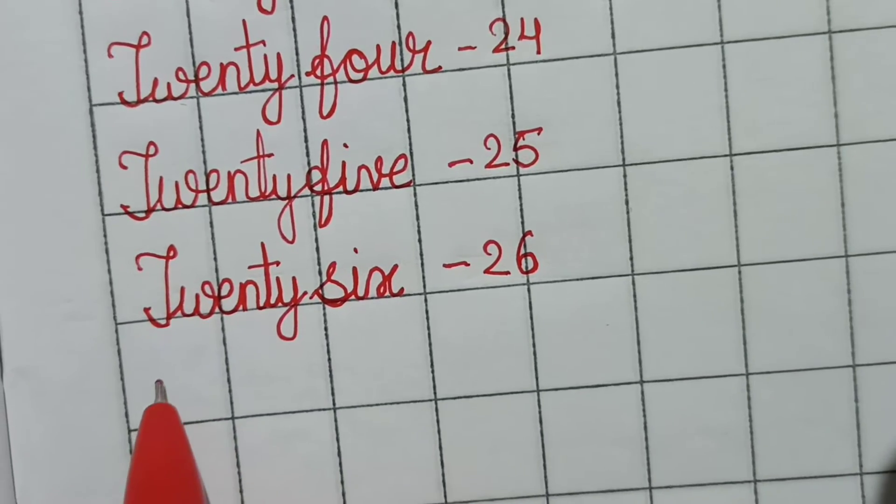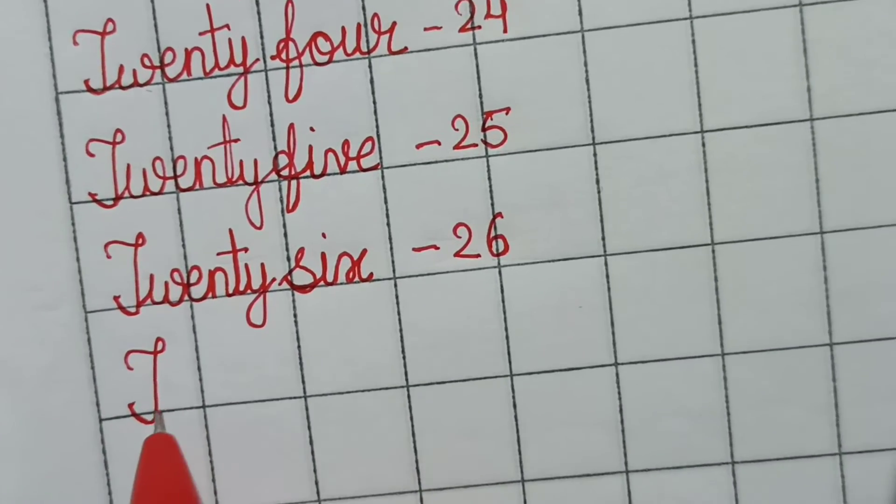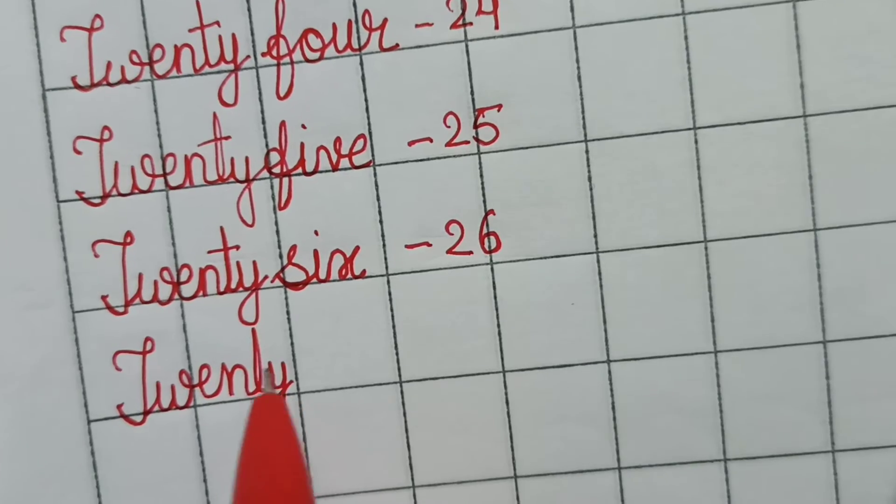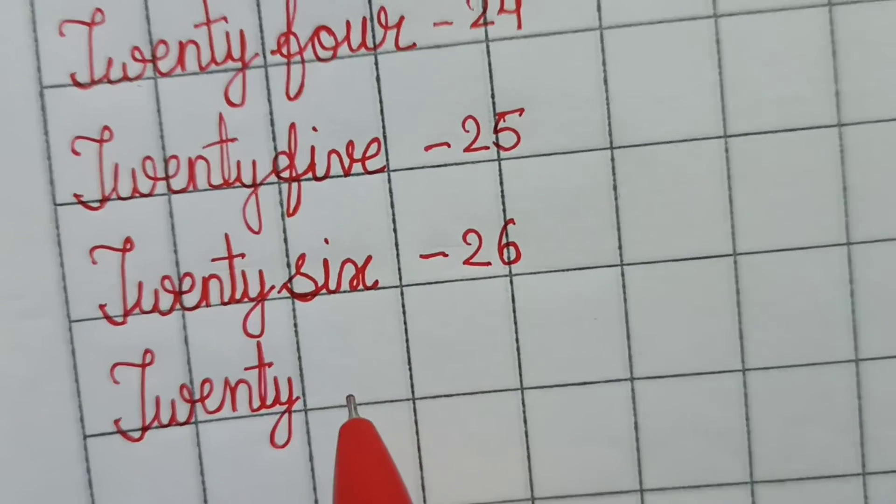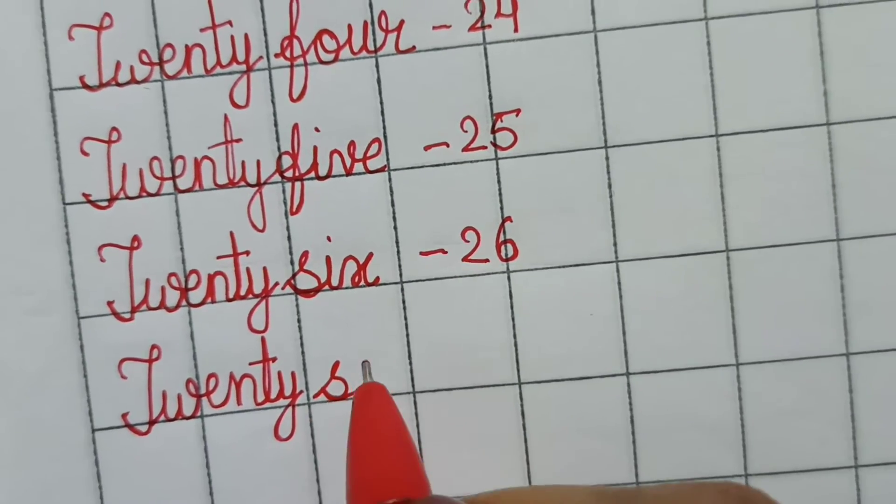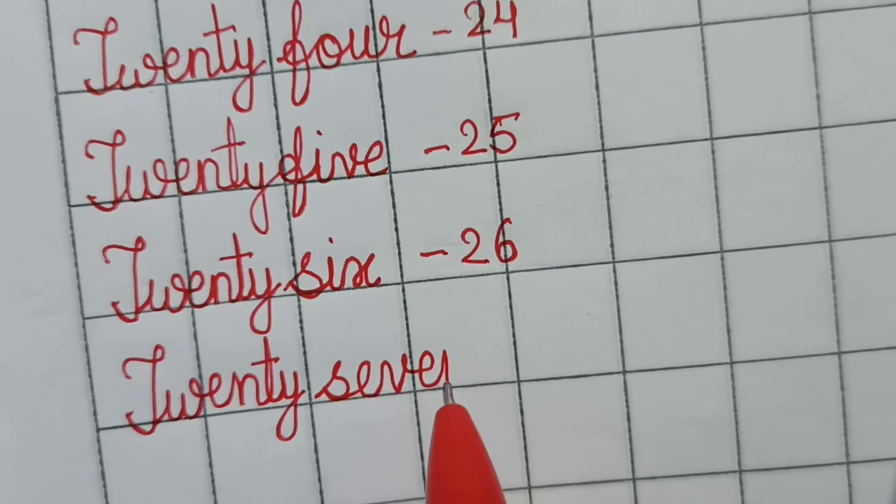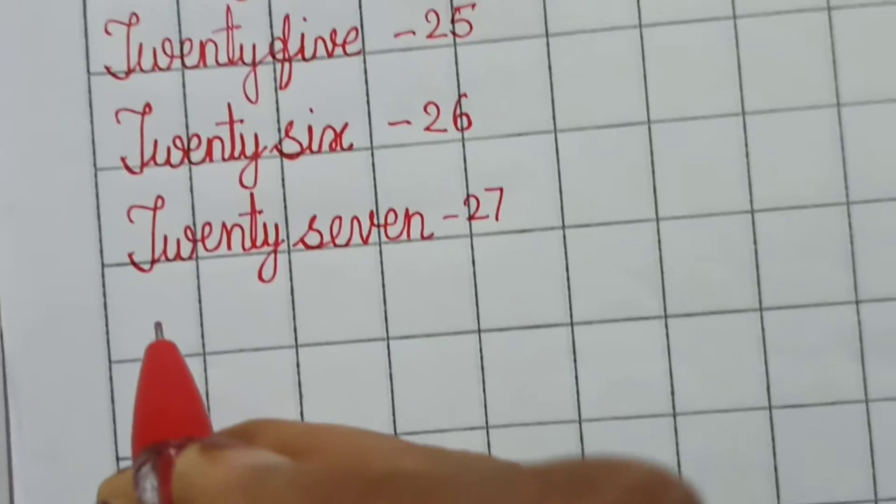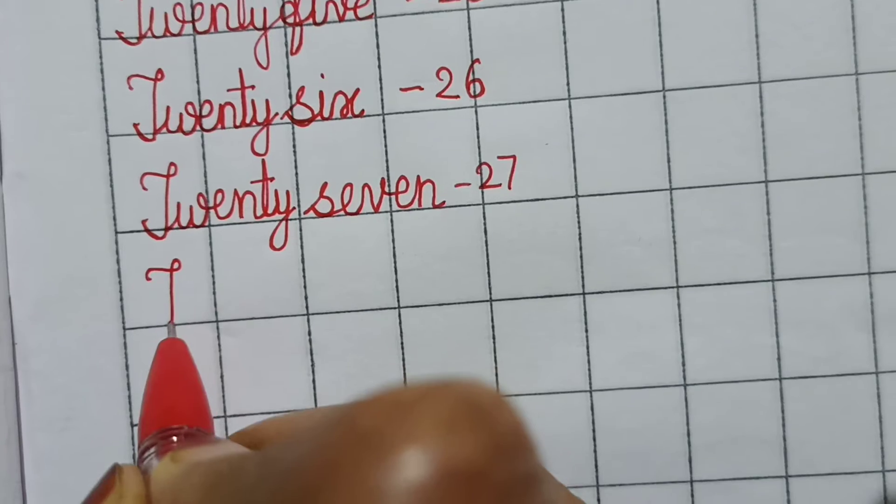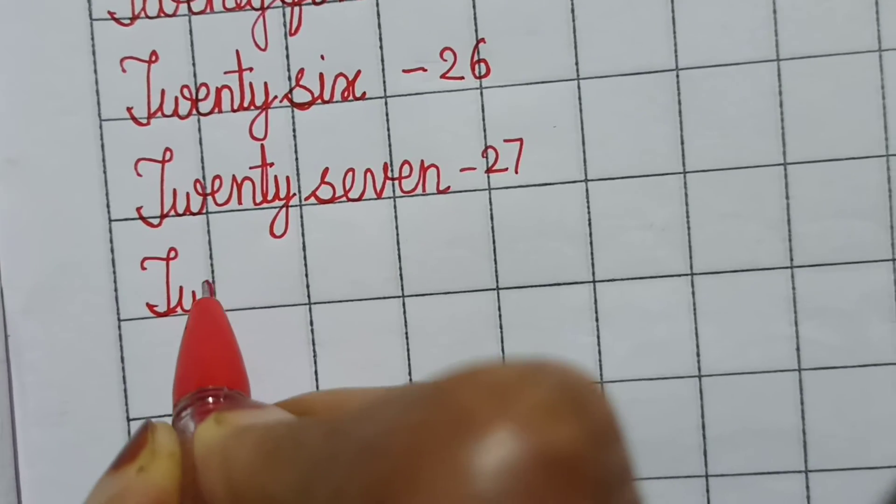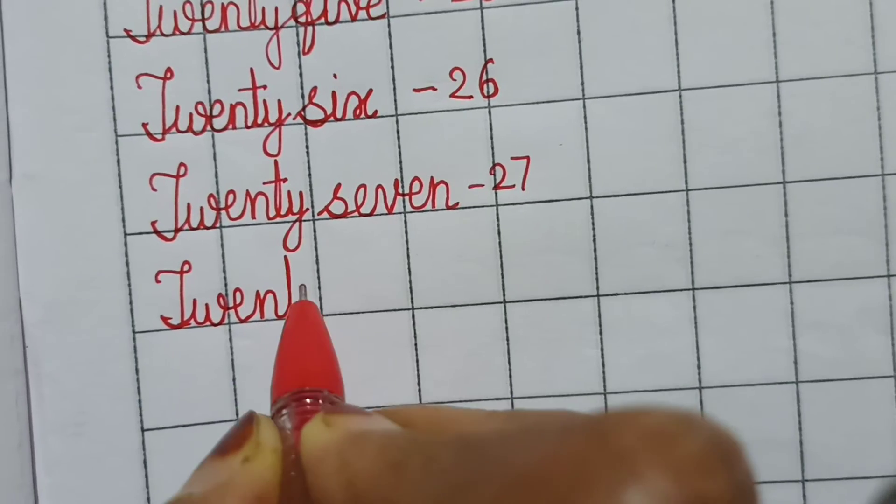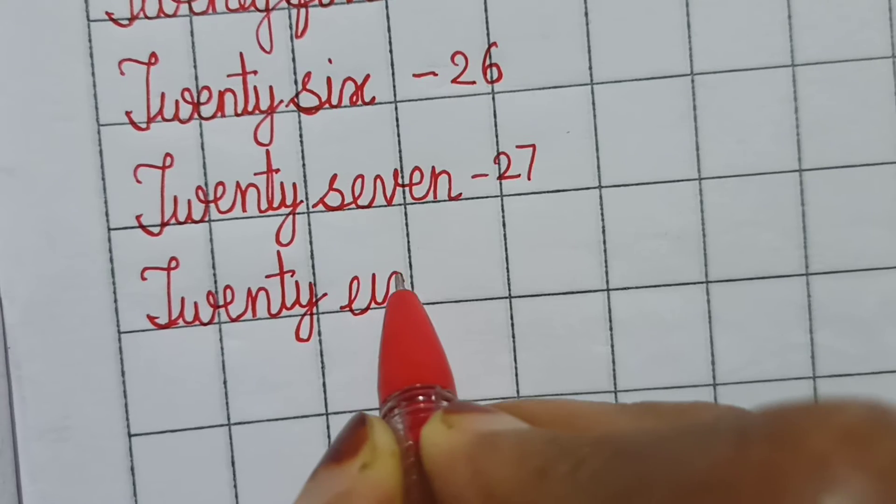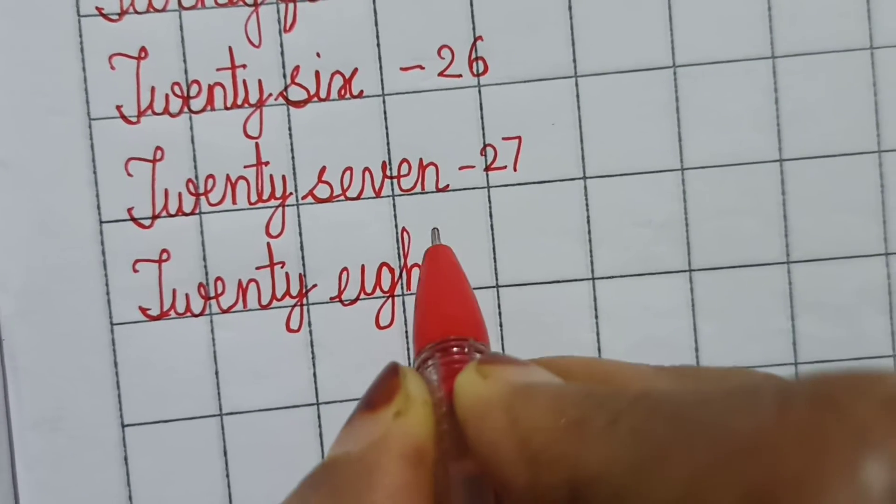Now we will write the spelling of 27. T-W-E-N-T-Y. Now write the spelling of 27. T-W-E-I-G-H-T. 8.